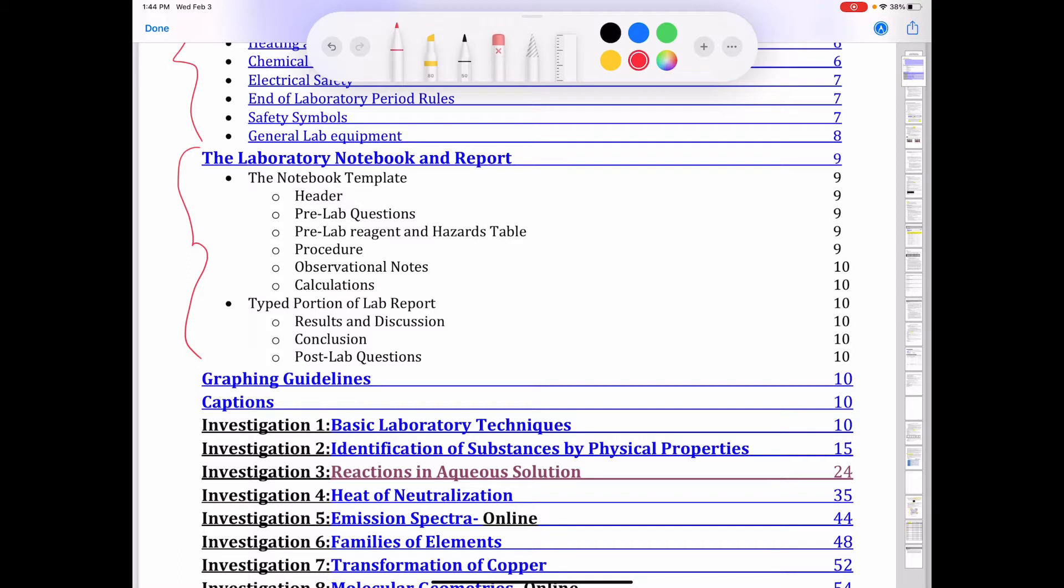So you want to make sure that you're ready to go when it comes time to do lab 1, when you step into the lab. And so what you're going to have to have completed when you come to the lab is you need to have your header, pre-lab questions, reagent table, and procedure all completed before you come to the lab. And again, that is for experiment 1, the basic laboratory techniques.